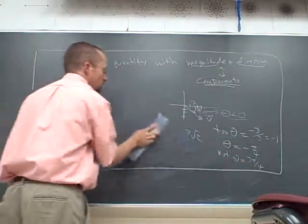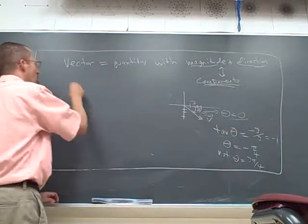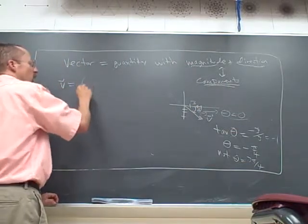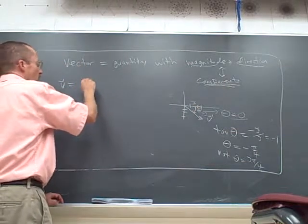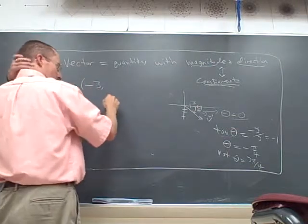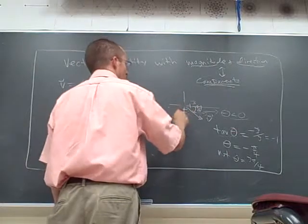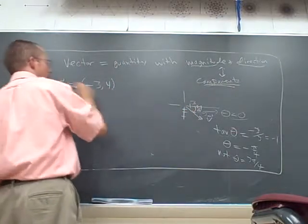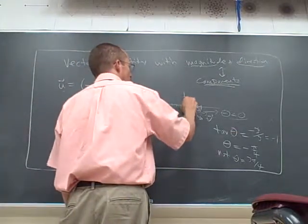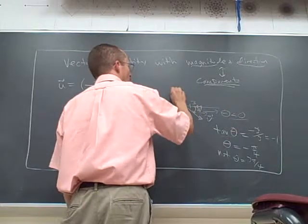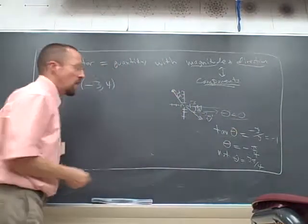In general, we're going to have to do an inverse tangent. So if instead, if V was like minus 3 comma 4, now that will say U, then that's going to be up here.